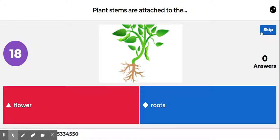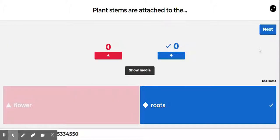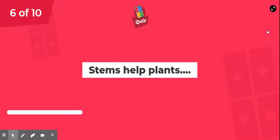Question number five: plant stems are attached to the flower or roots? Look at the picture for your clue. The answer is roots — they are attached to the roots.